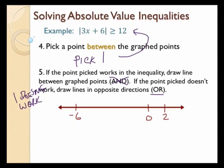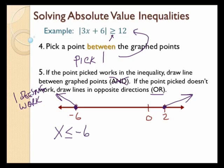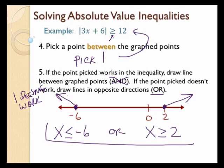I'm going to put my circles on negative 6 and 2, and because of the equal sign, I'm going to fill in the circles. Since it's an 'or,' I go in opposite directions. Now I write the inequality: x is less than or equal to negative 6 — the inequality points the same way as the arrow when the variable is on the left — or x is greater than or equal to 2. And there is my solution and my graph.